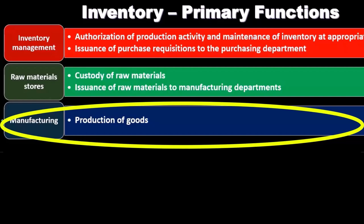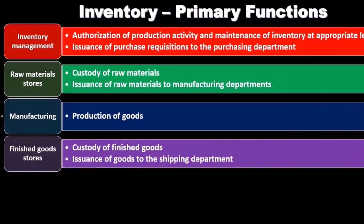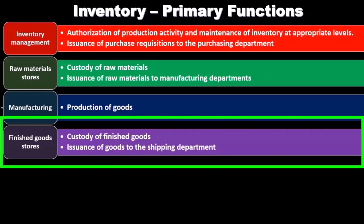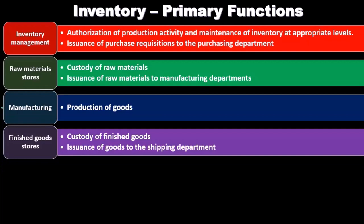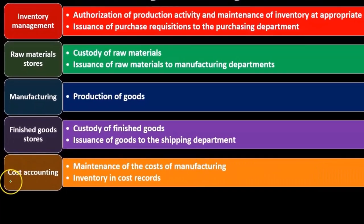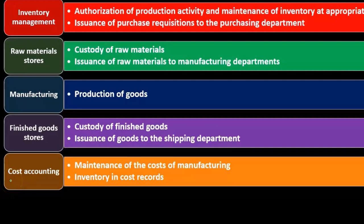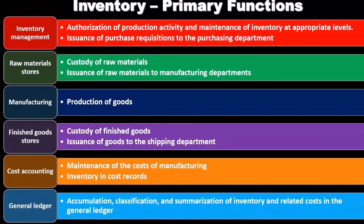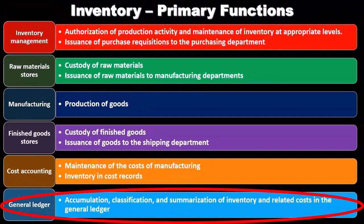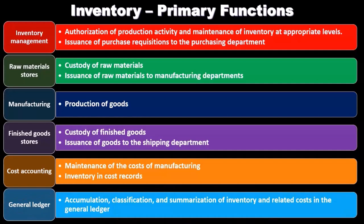Manufacturing is the production of goods. Then we have finished goods storage — the storage and custody of finished goods, and issuance of goods to the shipping department. Cost accounting is the maintenance of the cost of manufacturing, including inventory and cost records. The general ledger is the accumulation, classification, and summarization of inventory and related costs.